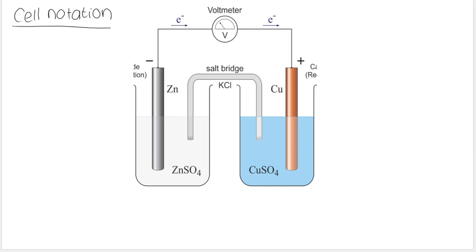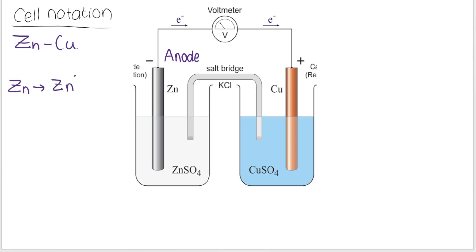In the previous lesson, we looked at the zinc-copper galvanic cell. By looking at Table 4B, we said that the zinc half cell was the anode half cell. Oxidation takes place at the anode, so zinc was oxidized — zinc metal loses electrons forming Zn²⁺ plus 2e⁻.